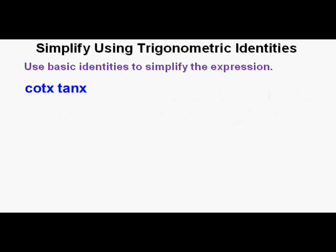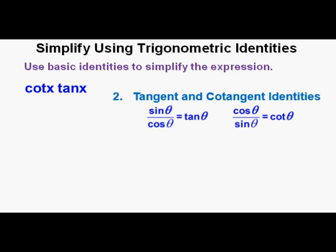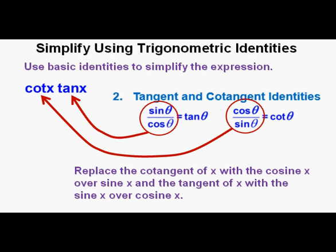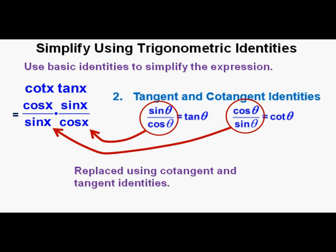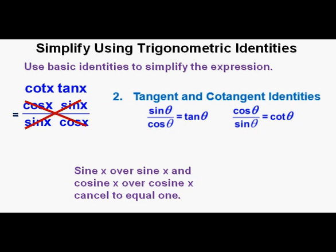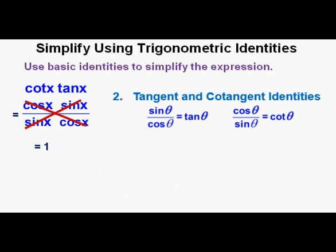Now for our next problem. Use basic identities to simplify the expression: cotangent x times tangent x. Since we have tangent and cotangent together, we'll use both identities — replacing cotangent with cosine x over sine x, and tangent with sine x over cosine x. Sine x over sine x cancels to equal 1, and cosine x over cosine x also cancels to equal 1. So we bring down what's left, and that's the number 1, which we box in as our correct answer.